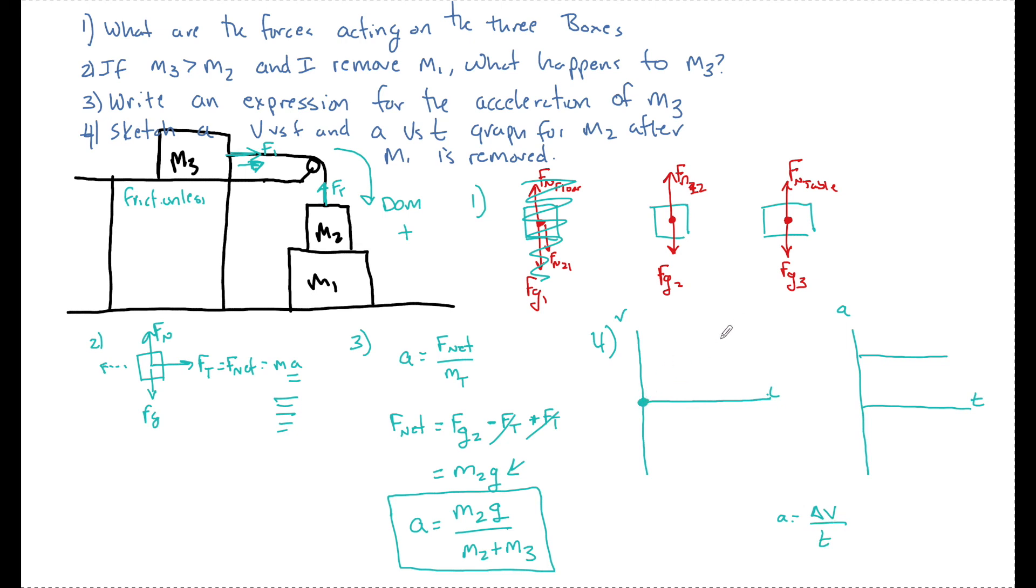And because the slope of a V versus T graph is equal to A, if A is constant, the slope must be constant as well.